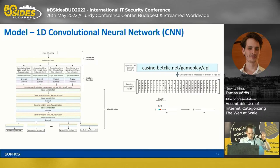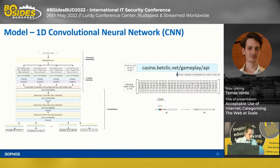The input to the model is a URL as a string. ML operates over numbers, not strings, so we need to convert that string into a numeric representation. We choose character-level embedding to do this. It takes every character of the input URL and maps it to a numeric vector — specifically a learnable numeric vector — in a way that characters occurring in a replaceable fashion, like digits in a URL, are mapped to similar numeric representations.